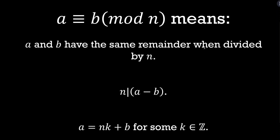Just a quick review: this first definition — A and B have the same remainder when divided by N — I like to call this the intuitive definition. It's a really intuitive way to think about modular congruence and helpful for quickly checking whether two numbers are congruent. But the second definition tends to be what is leveraged in advanced math courses — it's the primary definition, especially for writing proofs. That's what I'm going to use for the proofs in this video.